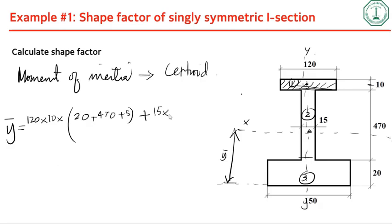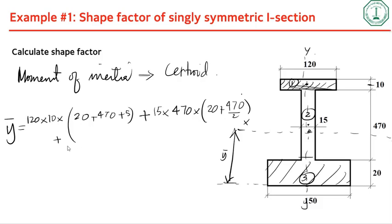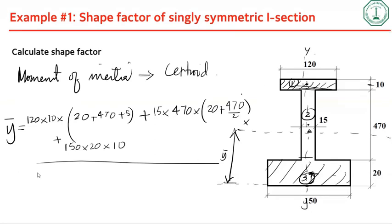The second area is 15 times 470, and the distance to its centroid is 20 plus 470 over 2. The third area is 150 times 20, and its centroid distance is 10. Divide the sum by the total area: 120 times 10 plus 15 times 470 plus 150 times 20.